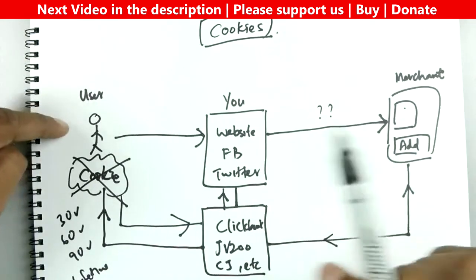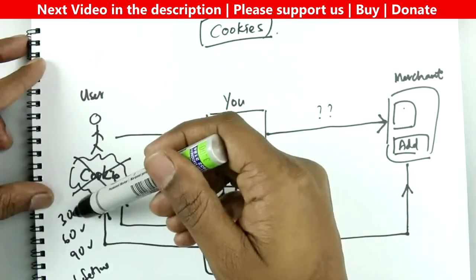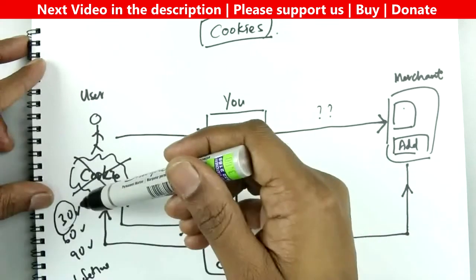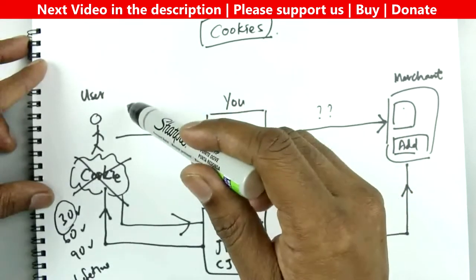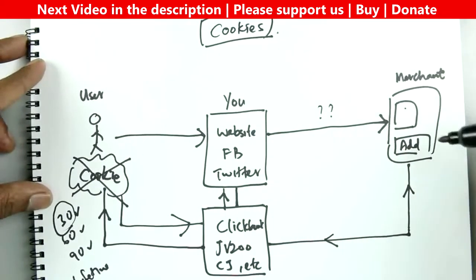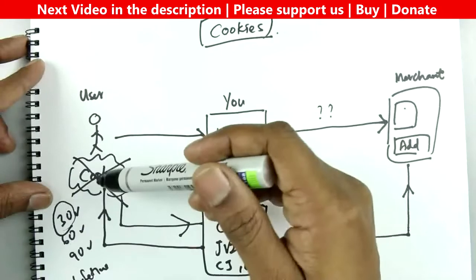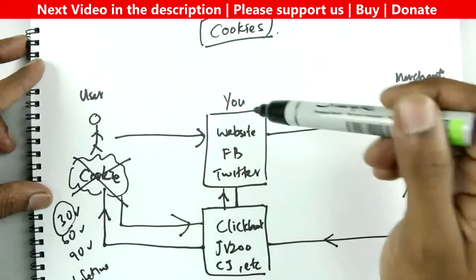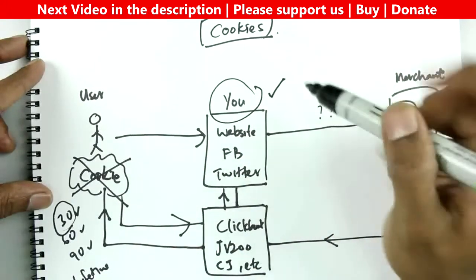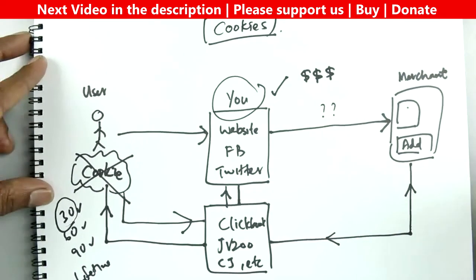If the user clicks your affiliate link from the same computer and browser but doesn't buy immediately, and comes back 15 days later - and the cookie has a 30-day expiration - then the cookie is still valid. Even if they go directly to the merchant site, when they complete the transaction, the merchant feeds back the information to the affiliate platform, which checks the cookie and confirms it was placed within 30 days and is still valid, crediting you for the sale. That's how you make money with affiliate marketing.